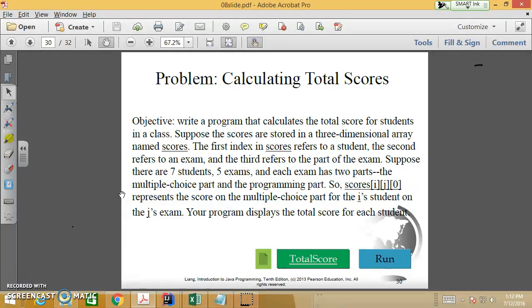Here's an example of the application for the three-dimensional race. So we can write program to calculate the total score for students in the class. Support the scores are stored in a three-dimensional array, name it scores. The first index is scores, refer to a student. The second refers to an exam. And the third refers to a part of exam. The seventh student, five exam, and two parts. So i, j. Right? And last one, which is the depth, two parts. So represent the score. This is the rate to represent the score on the multiple choice part for the i students on the j's exam. And the program will display the total score for each student.